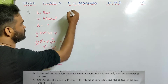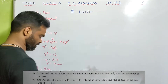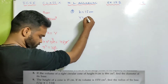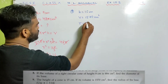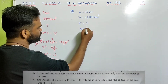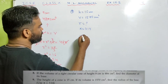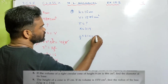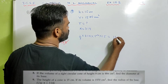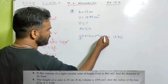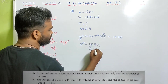Sum number 9: The height of the cone is 15 centimeter. If the volume is 1570 centimeter cube, find the radius of the base. Pi is 3.14. Same logic, same type of sum. Use one-third pi r square h = volume. Solving: r² = 1570 / (5 × 3.14).